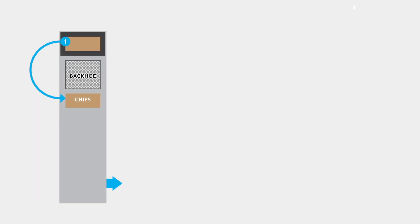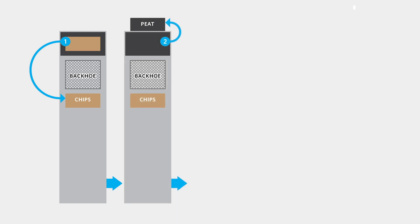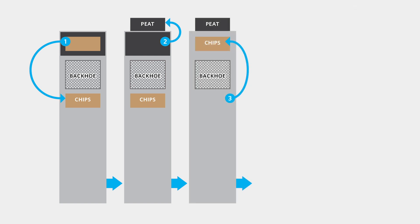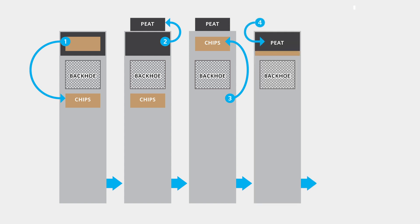Step one: scrape frozen wood chips from the road surface and pile behind the backhoe onto the road. Step two: excavate underlying buried peat and pile in front of the pit onto the road. Step three: return the excavated wood chips into the open pit. Step four: pull the excavated peat into the pit to bury the wood chips.